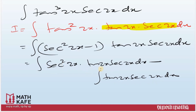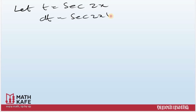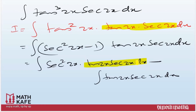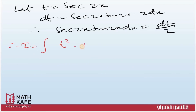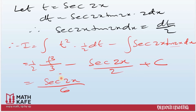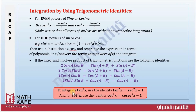For the first integral, let t = sec(2x). Differentiating: dt = sec(2x)·tan(2x)·2 dx, so sec(2x)·tan(2x) dx = dt/2. The first integral becomes ∫t² · (dt/2) = (1/2)·t³/3 = t³/6. The second integral ∫tan(2x)·sec(2x) dx is a direct formula: sec(2x)/2. Replacing t: the final answer is sec³(2x)/6 - sec(2x)/2 + C.